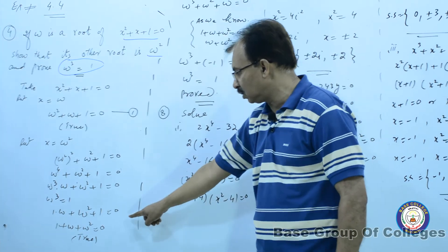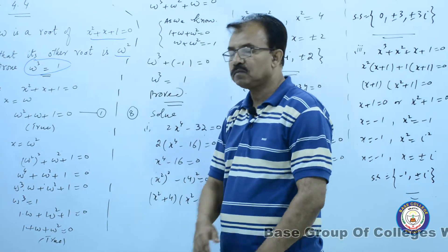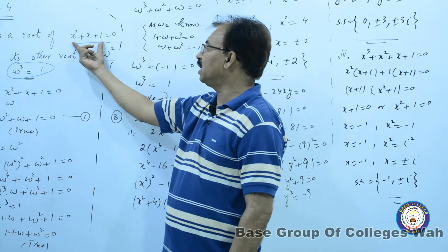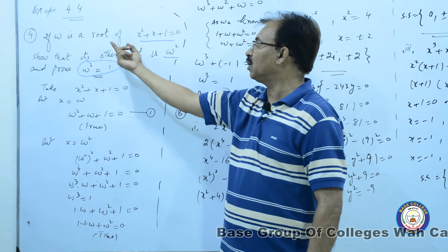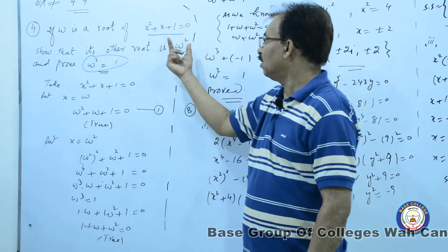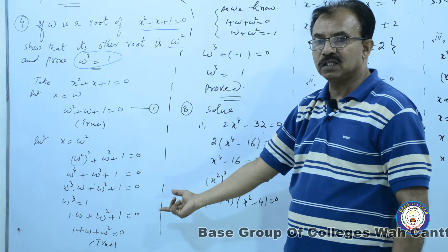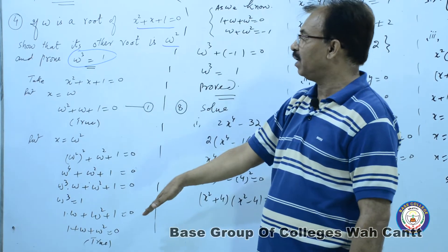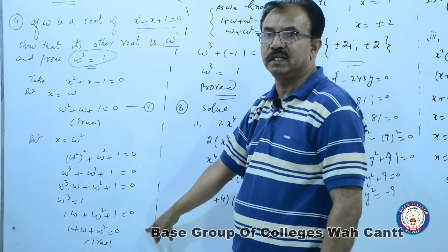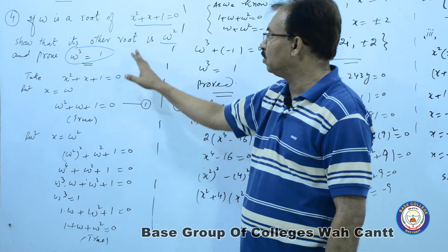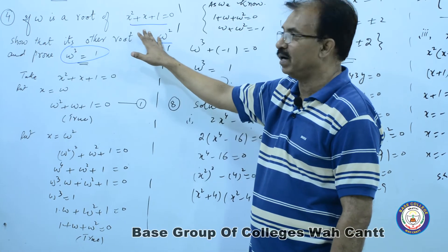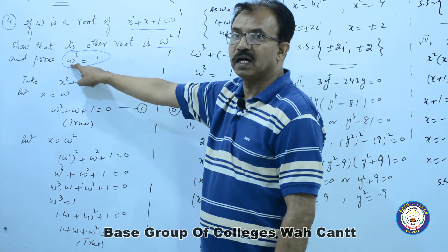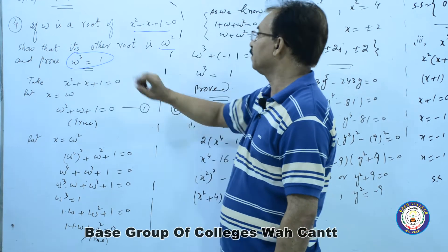اس کا مطلب یہ دوسرا root omega square ہے۔ اس طرح اس quadratic equation کے دو roots ہوئے: ایک omega ہے اور دوسرا omega square ہے۔ اگر extra بات نہ پوچھے تو question یہاں complete ہے۔ اب اس کے بعد یہ جو prove کرنا ہے کہ omega cube is equal to one۔